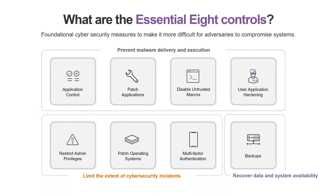The segment towards the bottom left in orange covers items that are there to limit the extent of cybersecurity incidents: restricting admin privileges, patching operating systems, and multi-factor authentication. A lot of people are doing quite well at getting MFA in place. And then the last square, bottom right, is about making sure we can recover — so unlike some breach stories, making sure backups are safe and cannot get encrypted themselves is a key part.